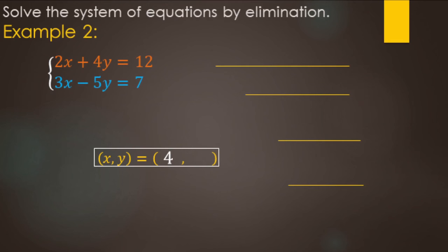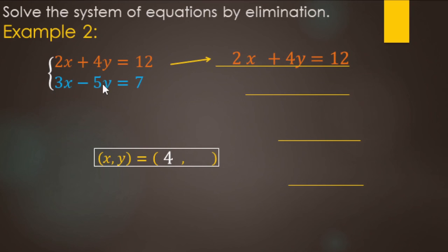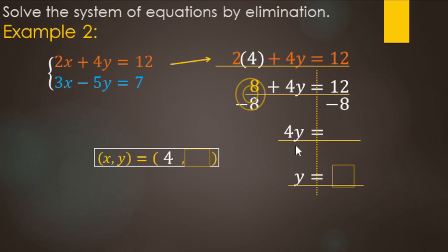Next, find the y value. Choose the top original equation — it has no negatives, so we're less likely to make an error. Replace x with 4: 2 times 4 makes 8, plus 4y equals 12. Undo the 8 with minus 8 on both sides: 4y equals 4. Divide both sides by 4: y equals 1. So the solution for this system is (4, 1).